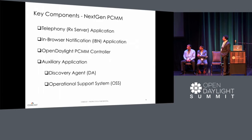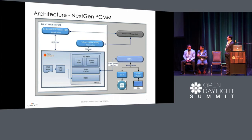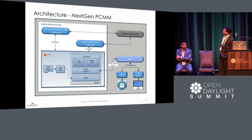Some of the key components of our next-gen PCMM are telephony and browser notification. We also had to implement a couple of auxiliary applications: Discovery Engine and Operational Support, which we'll share more about when we demo telephony and browser notifications. In our architecture, we have two applications talking to the application manager, handling requests for in-browser notification to the ODL controller of our CMTSs.